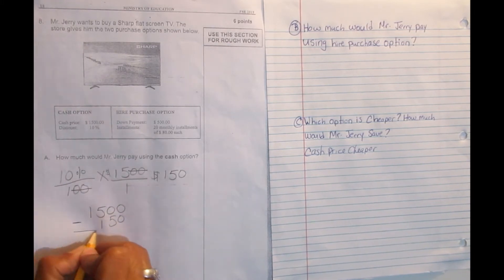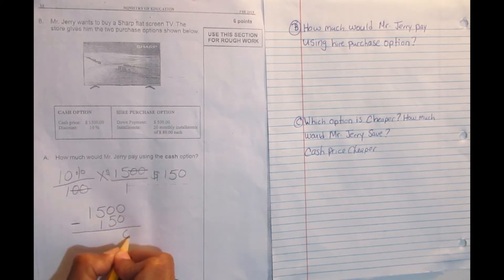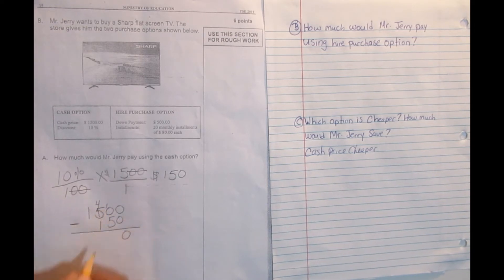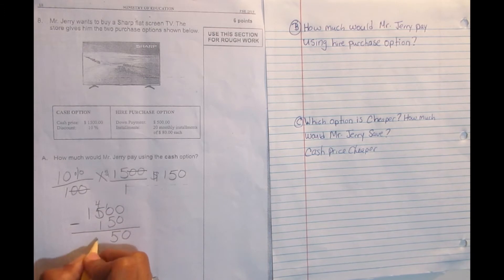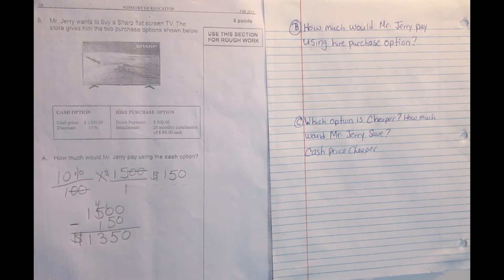And this will give us the cash price of the TV. Zero from zero is zero. Zero from five can't, borrow from the five. The five becomes four. This becomes ten. Ten minus five is five. Four minus one is three. And one. So it's $1,350.